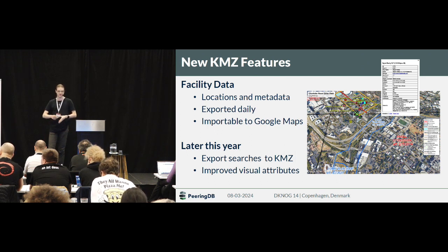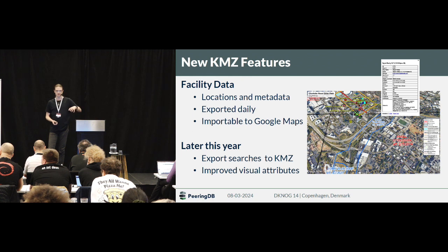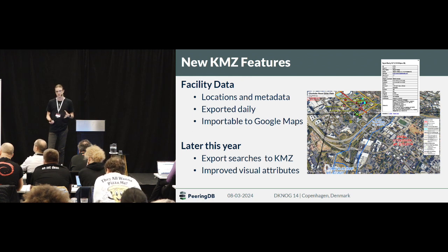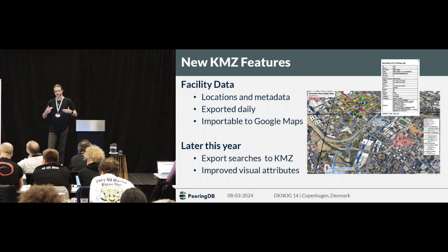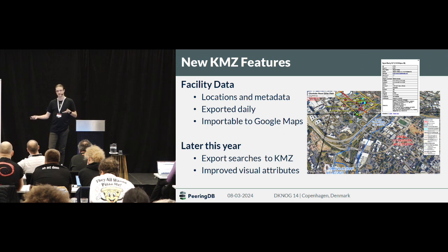The blue area in the front is a creek in the city. In this example, it's basically the KMZ set export from PeeringDB overlaid with data from other data sources, where you can then visually make it more presentable to management — for example, asking whether it was a bad idea to have a data center here because the flood risk is higher.